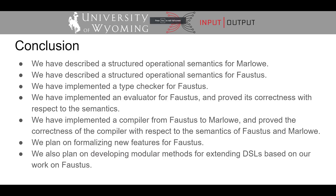In conclusion, we have described a structured operational semantics for Marlowe based on its evaluator. We have also described a structured operational semantics for Faustus. We have implemented a type checker for Faustus that has also been formally verified. We have also implemented an evaluator for Faustus and proved its correctness with respect to the semantics. We have also implemented a compiler from Faustus to Marlowe and proved the correctness of the compiler with respect to the semantics. In the future, we plan on formalizing new features for Faustus, such as merkelization of the contracts to allow for more compact representation of the contracts on the blockchain. We also plan on developing modular methods for extending DSLs based on our work on Faustus.